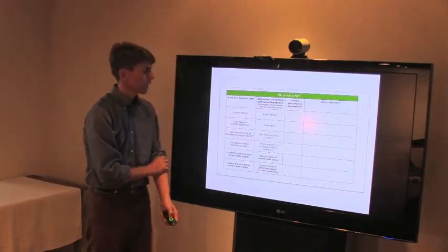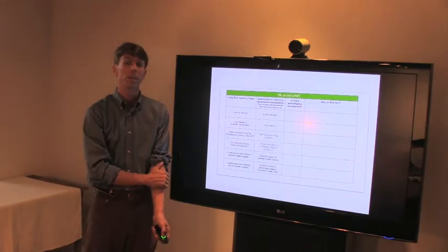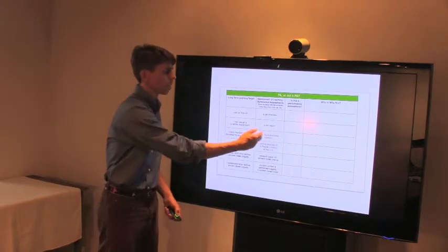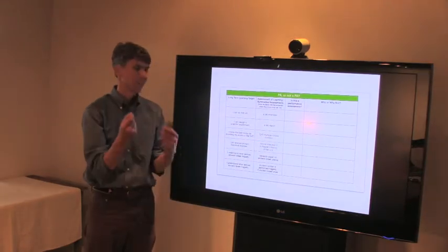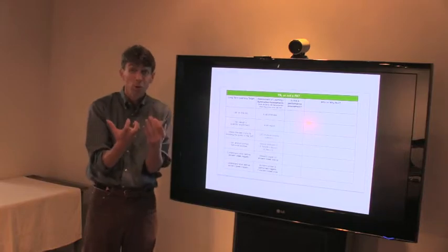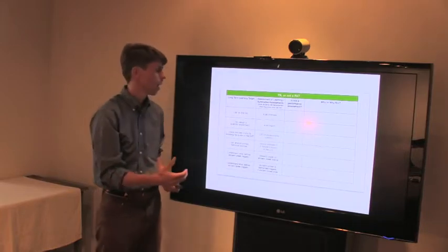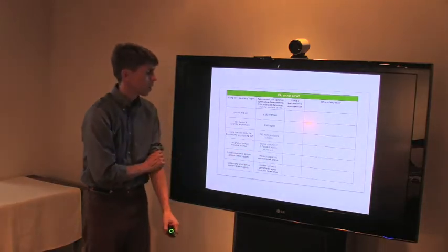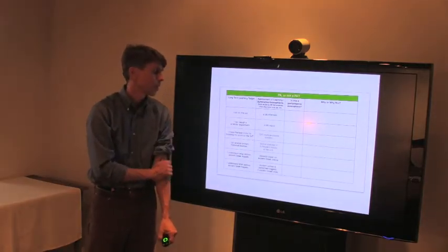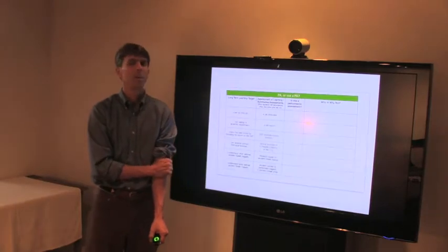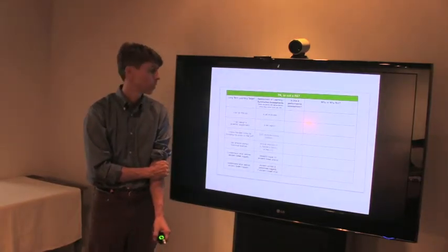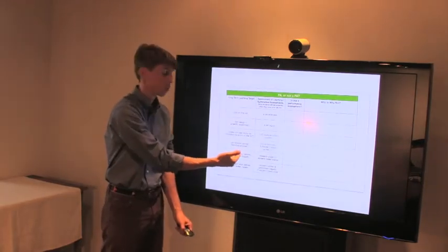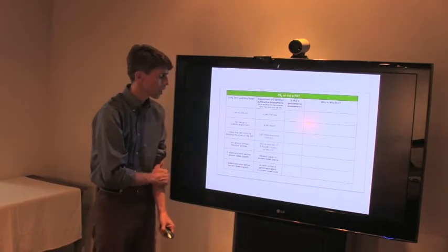The multiple choice question for the SAT, definitely some cognitive dissonance there. But ultimately, we're going to get to the fact that when it's that closed of an answer, when you're not producing or performing something, it probably doesn't qualify. I can analyze primary historical sources. Textual analysis of people's history is not going to be an assessment of that target because it doesn't rely on primary sources. You need to have them reading something differently if that's your target. And lastly, these last two for Greek tragedy,